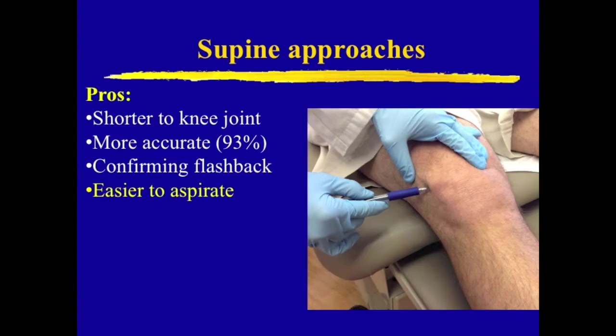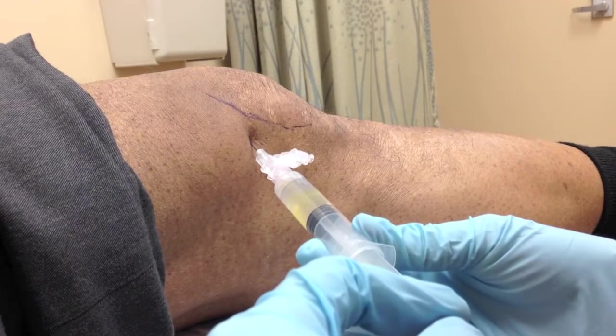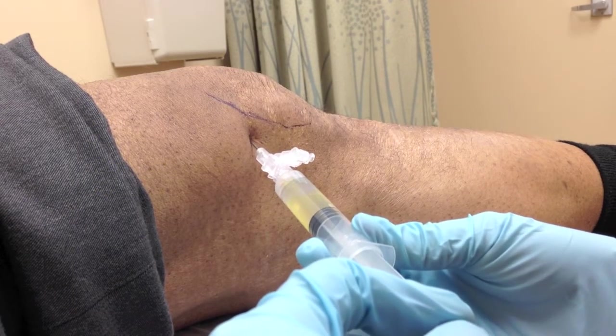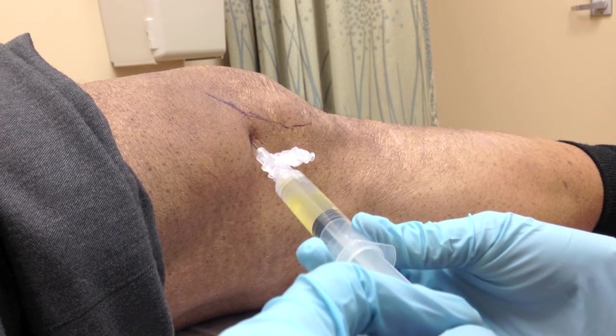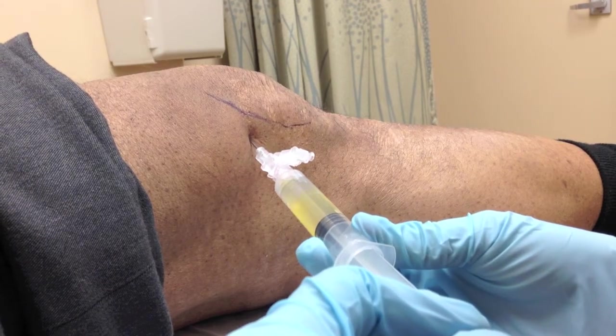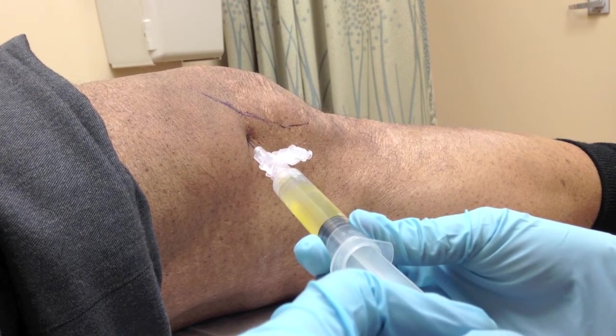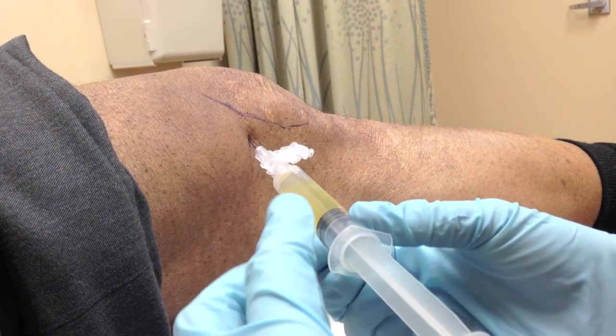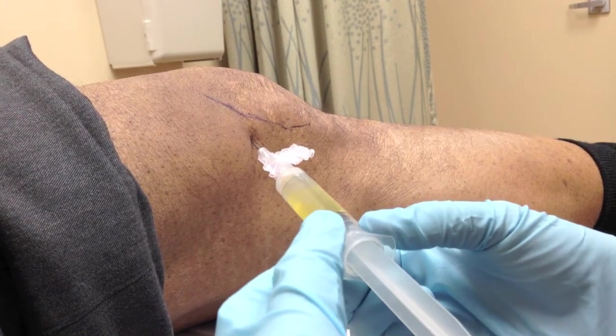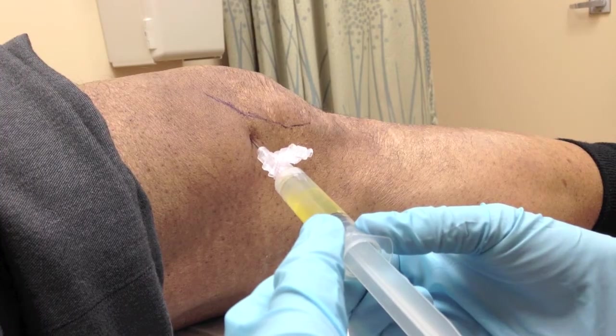Finally, the supine approach is also the best one for aspirating a large effusion, because the fluid can be milked down from the large suprapatellar bursa which is continuous with the knee joint.